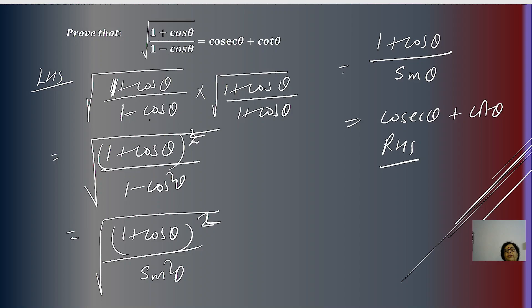For these types of questions, whether cos or sin is involved, the most straightforward approach is to rationalize the denominator and then proceed to simplify.